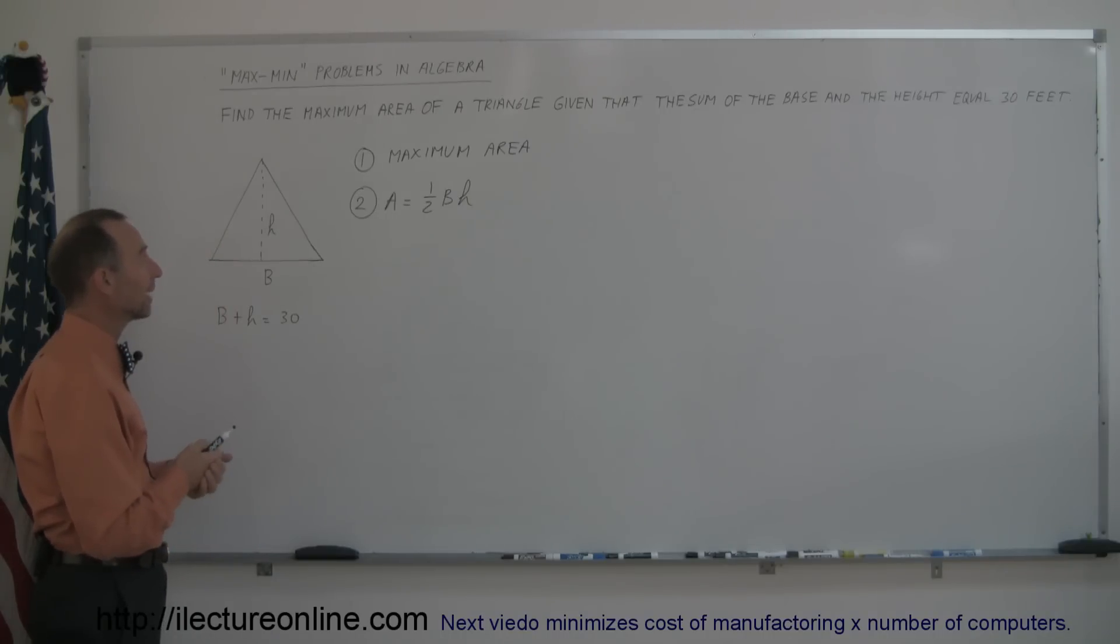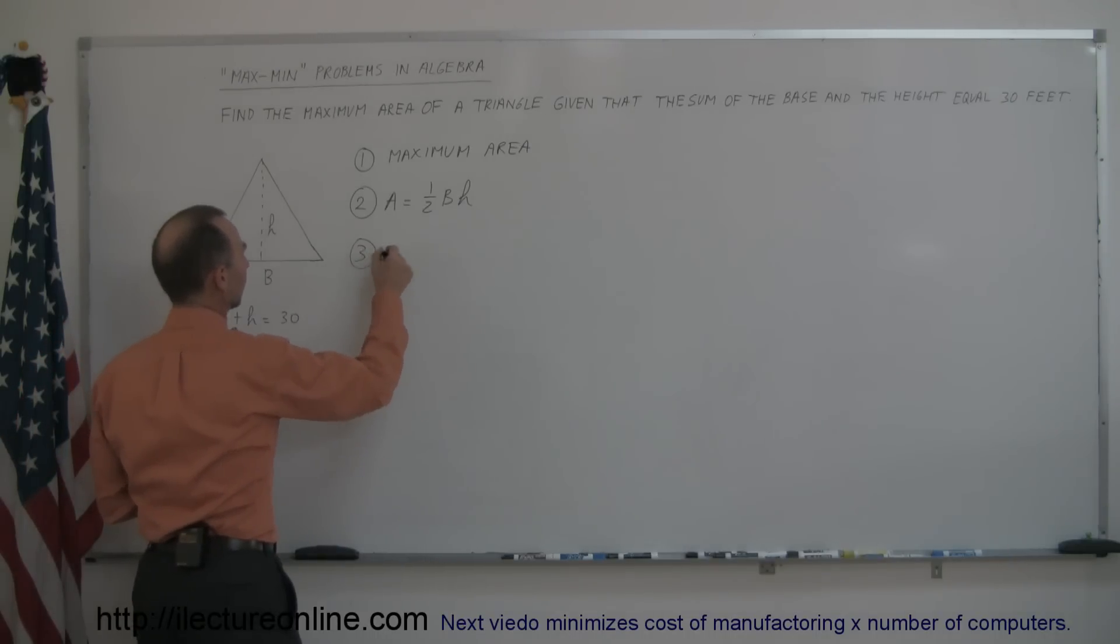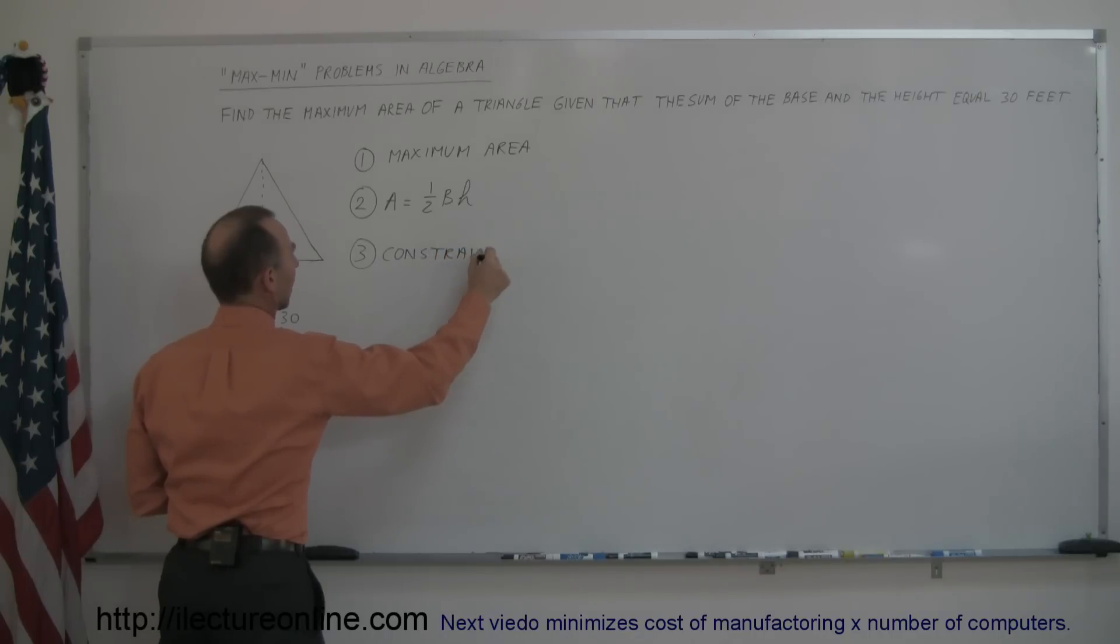So you want to now find some sort of constraint, some sort of relationship between the base and the height that will allow us to write this equation in terms of just one variable. So the constraint, in this case, is that the base plus the height equals 30.